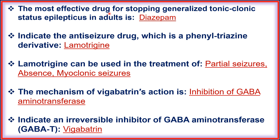The most effective drug for stopping generalized tonic-clonic status epilepticus in adults is diazepam. The anti-seizure drug that is a phenyltriazine derivative is lamotrigine. Lamotrigine can be used in the treatment of partial seizure, absence seizure, and myoclonic seizure.